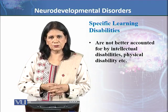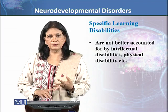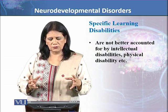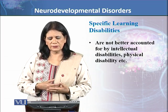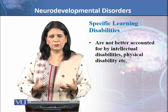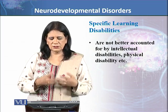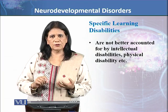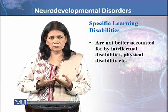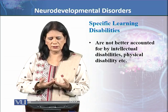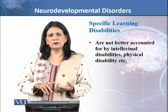It is important to note that these learning disabilities are not better accounted for by intellectual disability or physical disabilities. If a child has a low IQ, they will struggle across all areas — reading, writing, and mathematics — so intellectual disability must be ruled out. Similarly, physical disabilities such as psychomotor coordination problems affecting writing, or speech problems affecting verbal tasks, must also be ruled out as the cause before diagnosing Specific Learning Disabilities.